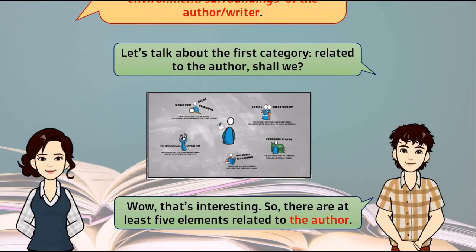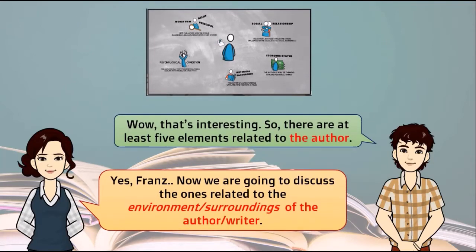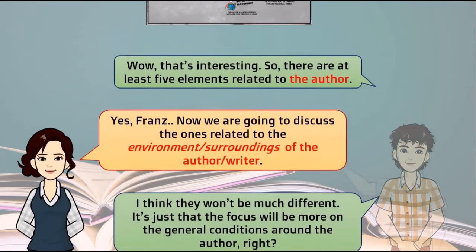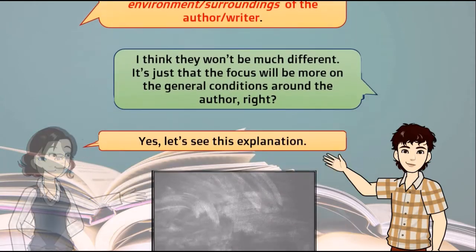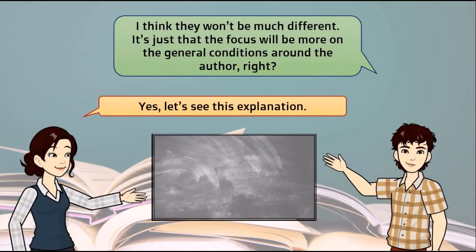Wow, that's interesting — so there are at least five elements related to the author, right? Yes. Now we are going to discuss the ones related to the environment or surroundings of the author. I think they won't be much different — it's just that the focus will be more on the general conditions around the author, right? Yes, let's see this explanation.